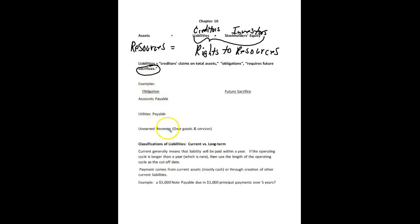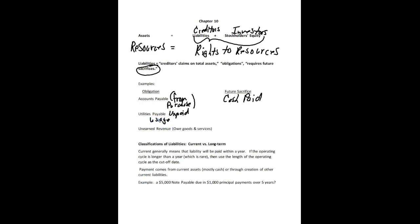Let's look at some typical liabilities. We have accounts payable — that's because we bought something, we haven't paid cash for it, so we owe for it. In the future, the sacrifice is cash. Same thing with utilities payable, which represents unpaid usage of services, and wages payable. Both are services we consume as a business, and if it's a payable, we owe money on it. So 'payable' indicates we will pay cash in the future.